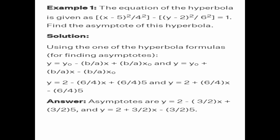Using the hyperbola formulas for finding asymptotes: y equals y₀ minus (b over a)(x) plus (b over a)(x₀), and y equals y₀ plus (b over a)(x) minus (b over a)(x₀).